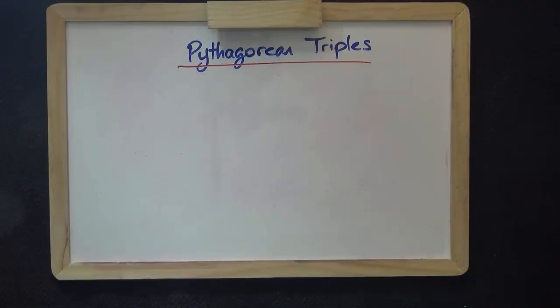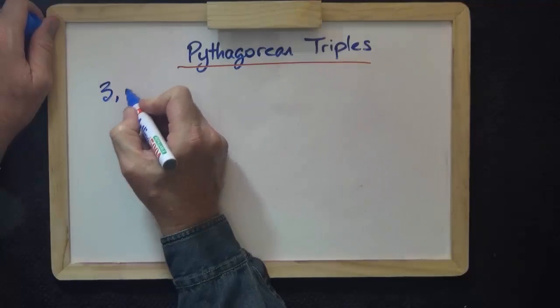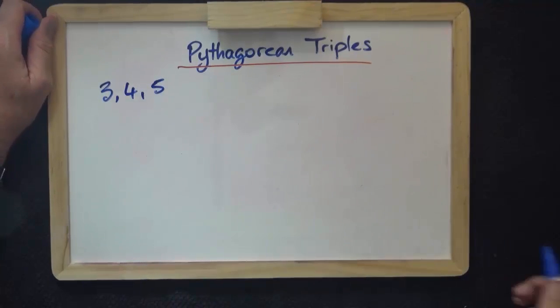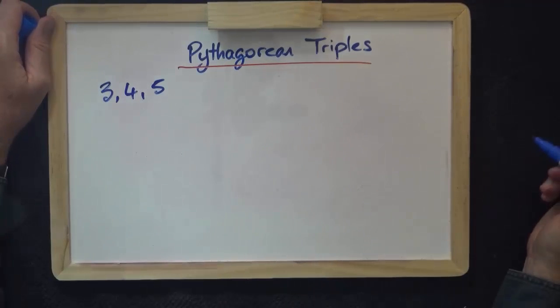Lastly, I want to talk about Pythagorean triples. Do you remember we already had 3, 4, 5, where each of the numbers is a whole number? Well, there are quite a number of others.